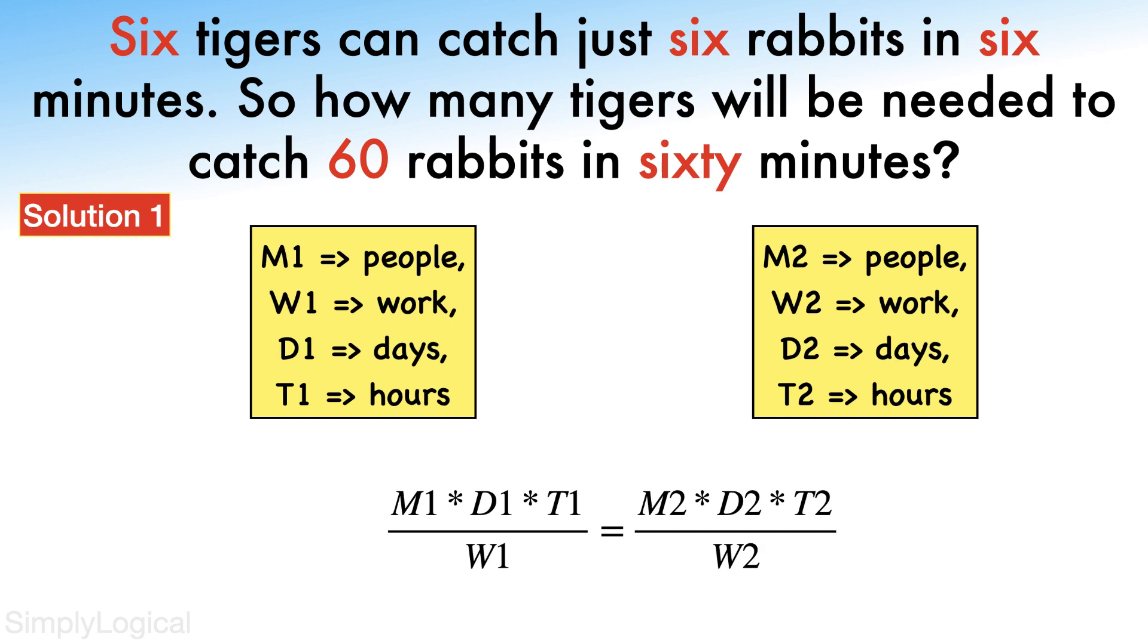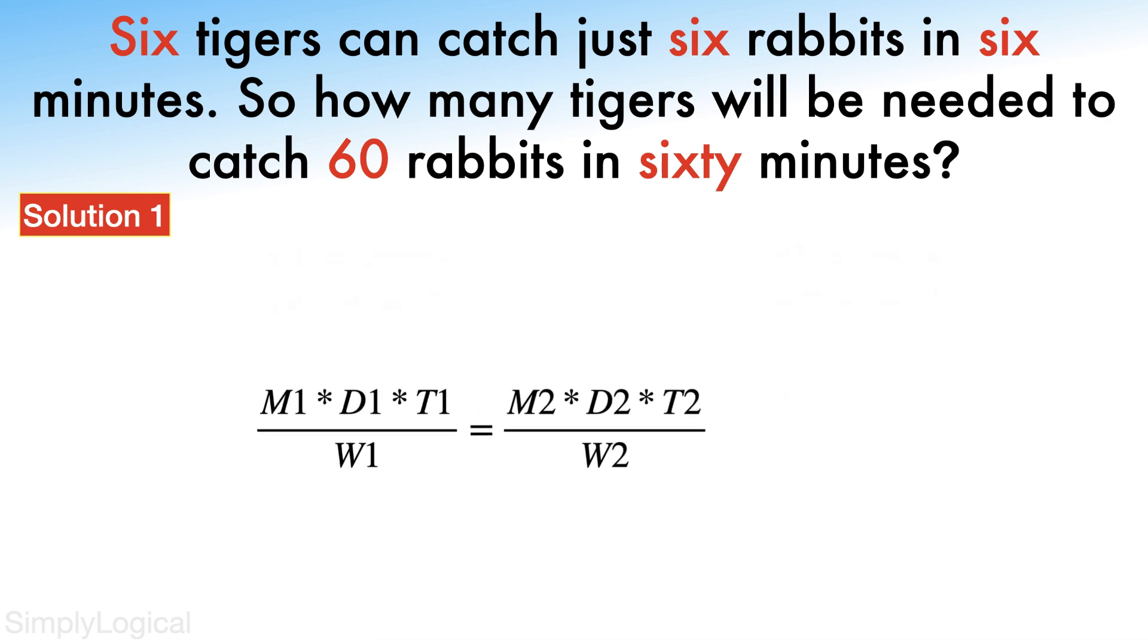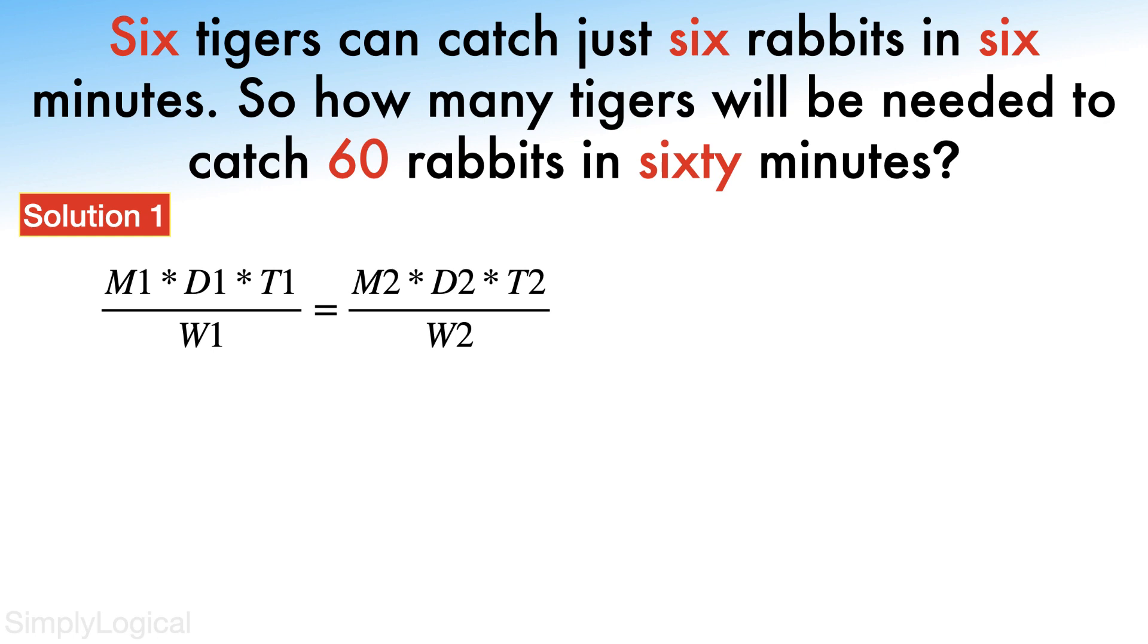So here in this problem, the given information is six tigers can catch just six rabbits in six minutes. So what we are supposed to find is the number of tigers which is required to catch 60 rabbits in 60 minutes.